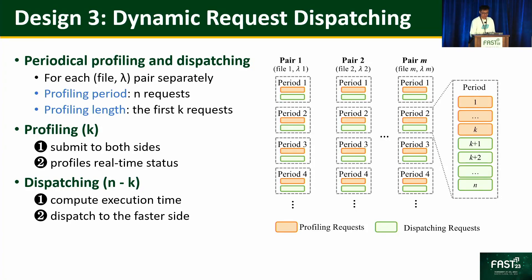With the execution time modeled, Lambda I/O uses equations to predict execution time on both sides. It then profiles and dispatches requests periodically. During a period of N requests, Lambda I/O submits the first K requests to both sides to profile the real-time status of the host and the device. For the remaining N minus K requests, Lambda I/O computes the execution time using the models and dispatches each request to the faster side.